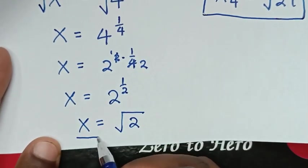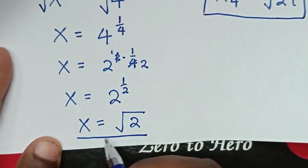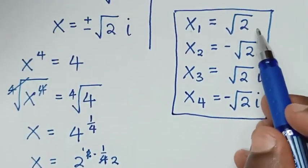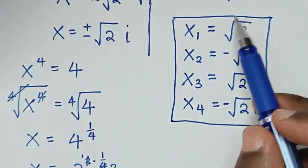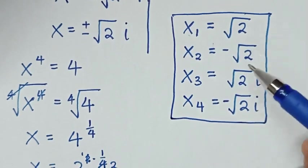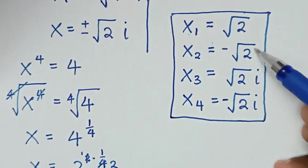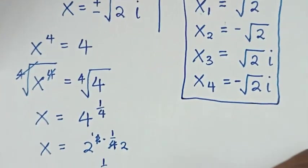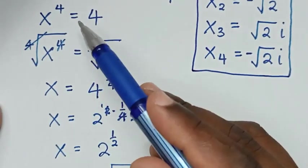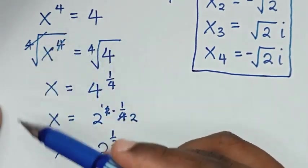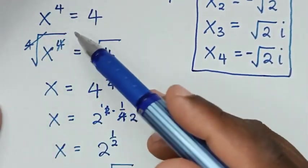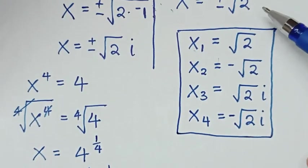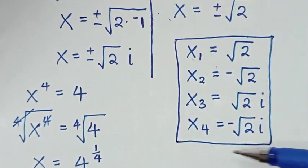Here we have got only one value of x, which is the first value, but we miss the other three values of x. So this second method is not an efficient method. The first method is the best method.